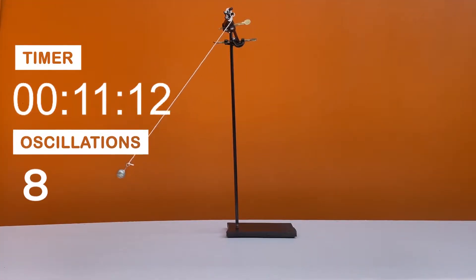To measure the oscillations of a simple pendulum, we need the formula T equals 2π times the square root of L over g.